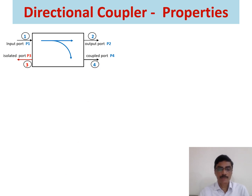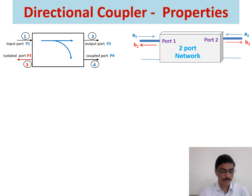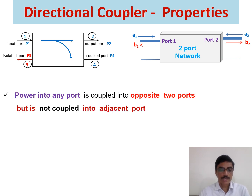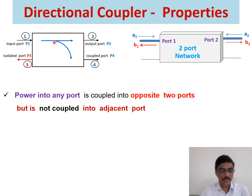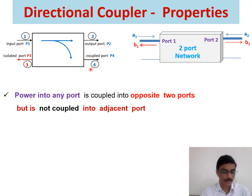These properties can be better explained by using a 2-port network. The first property is: power into any port is coupled into the opposite 2 ports only, but is not coupled into adjacent ports. When an input signal travels from port number 1 to port 2, a part of the signal is coupled to port number 4, and the amount of coupled power depends on the coupling factor. No power enters port number 3 because port number 1 and port number 3 are isolated ports.